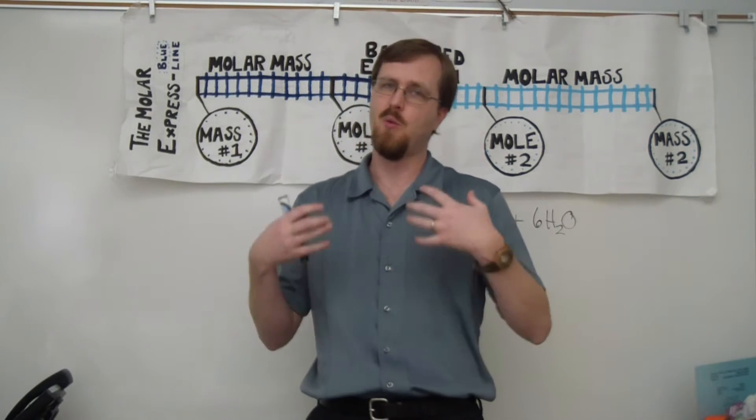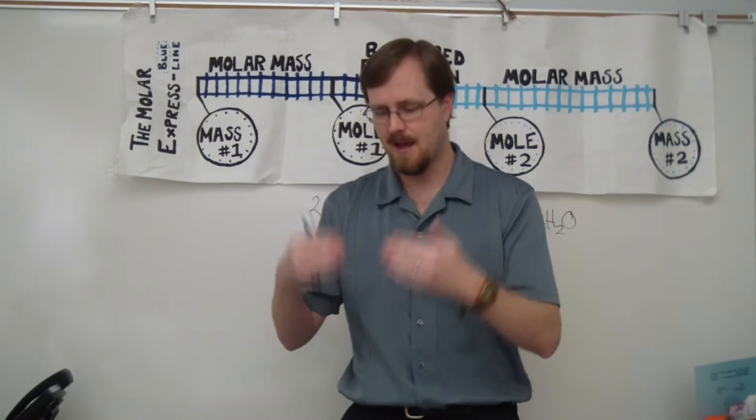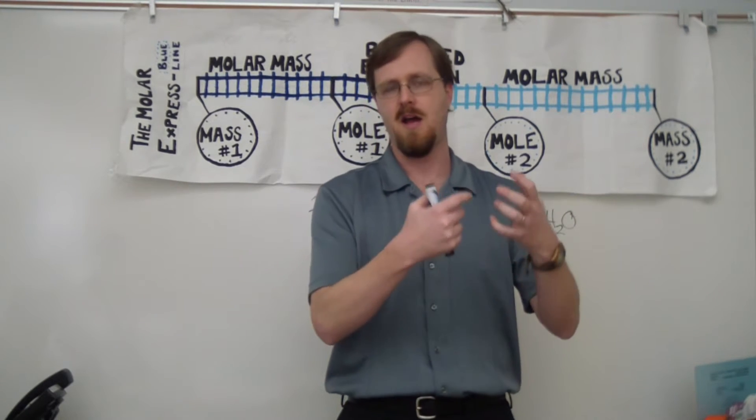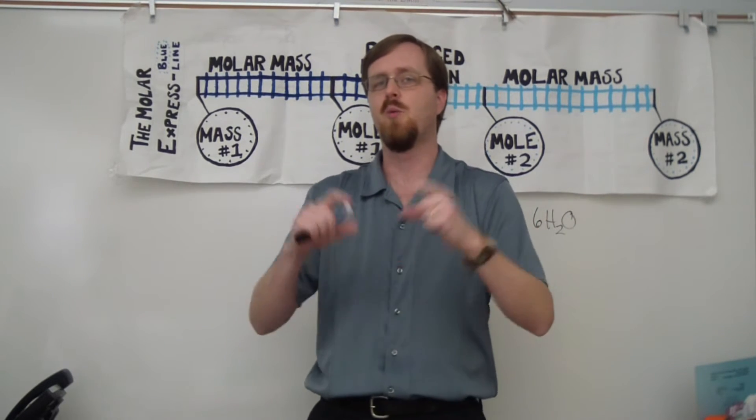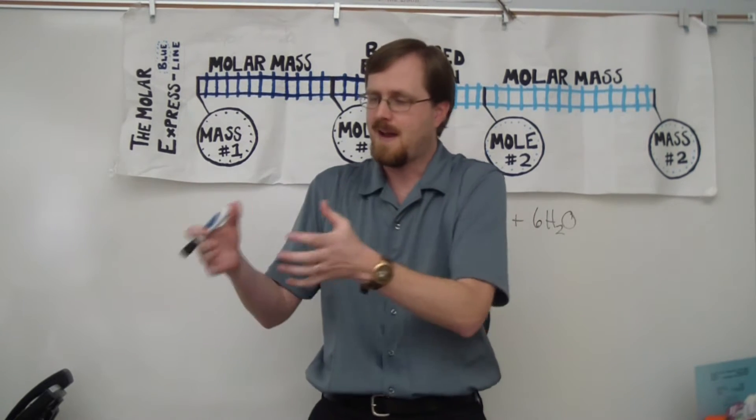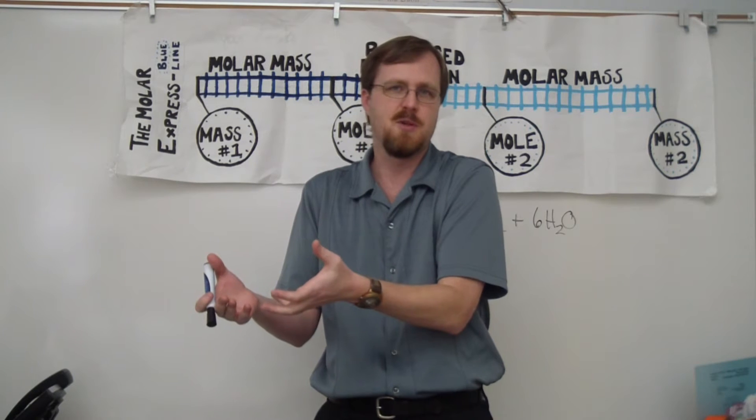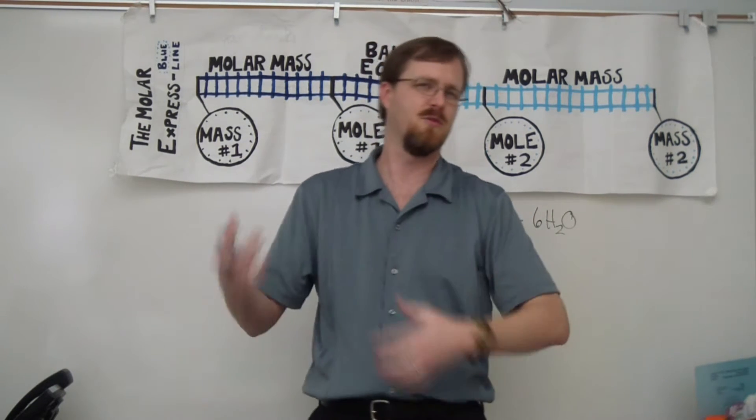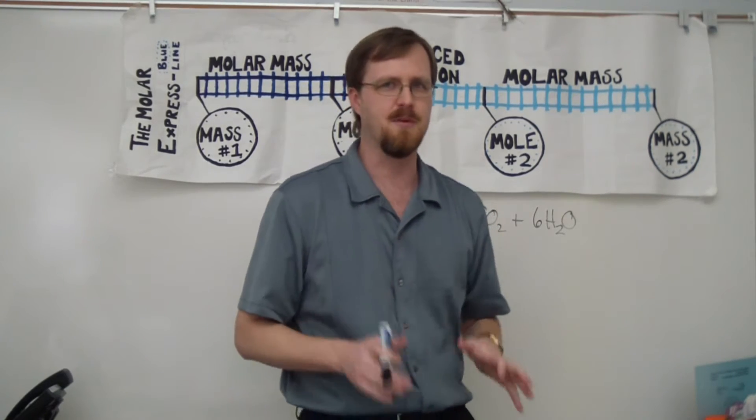Now what does that mean for actually what we are doing? Well, the way that chemists use stoichiometry is a way to compare elements and compounds to each other within a chemical reaction, so that we know if I have this much of this particular element, how much product is going to be made. So let me show you some examples.